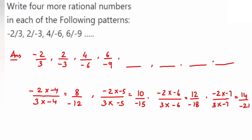So the four more rational numbers in this pattern are: 8/(-12), 10/(-15), 12/(-18), and 14/(-21). That's it — we have found four more rational numbers following this pattern.